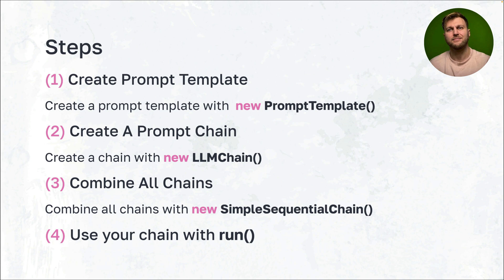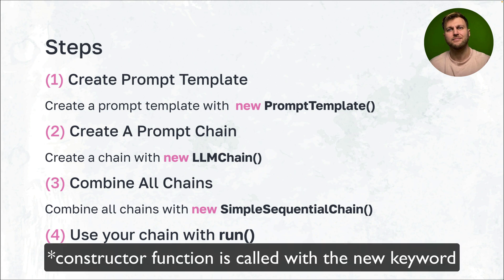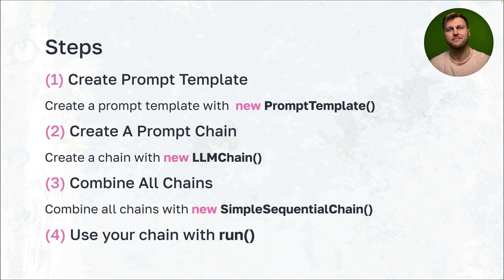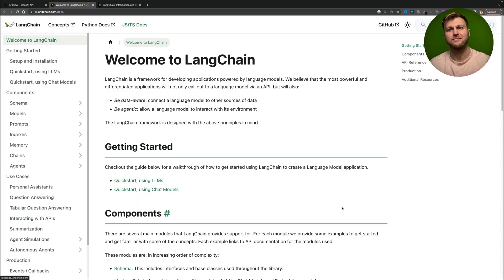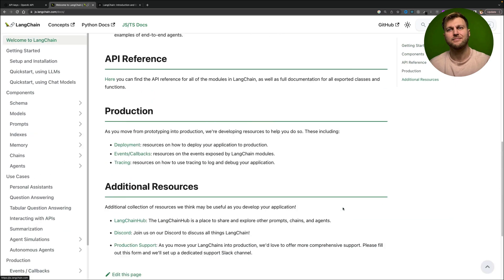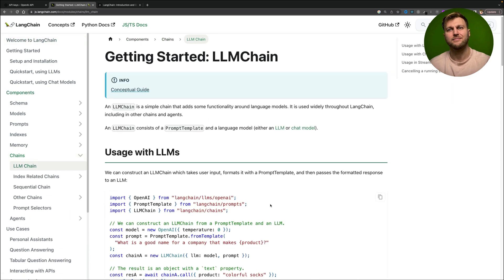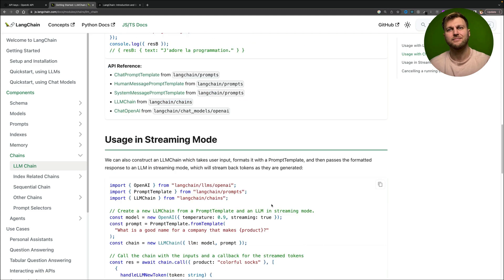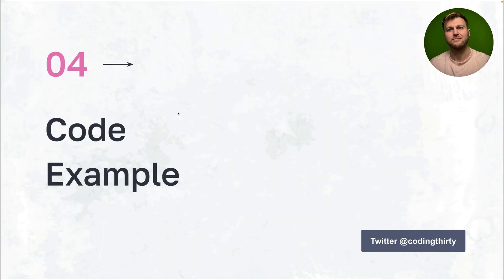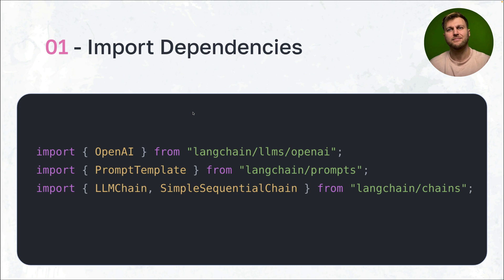Here are the steps to do it. First, you create a prompt template using the new PromptTemplate method. Then you create a chain using the new LLMChain constructor. Then you combine all the chains together using the new SimpleSequenceChain method, and finally you run it. I know this from reading the documentation, and you should too — it's a great resource that shows all the cool things you can do, particularly around chaining and LLM chains.